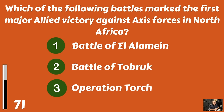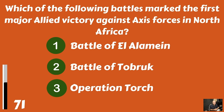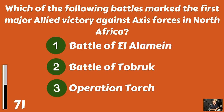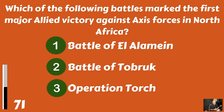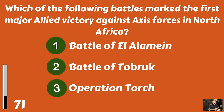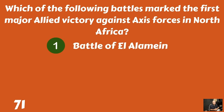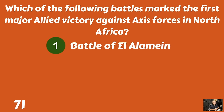Which of the following battles marked the first major Allied victory against Axis forces in North Africa? The Battle of El Alamein? The Battle of Tobruk? Or Operation Torch? It was the Battle of El Alamein.